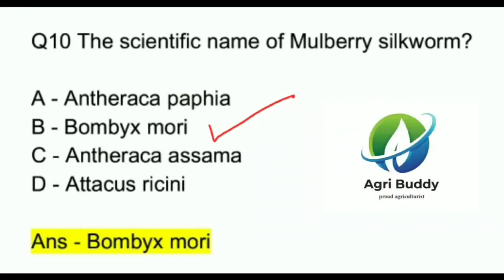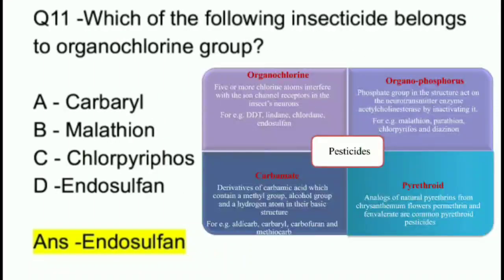Question 11. Which of the following insecticide belongs to organochlorine group? A. Carbaryl. B. Malathion. C. Chlorpyrifos. D. Endosulfan. And the answer is Endosulfan.